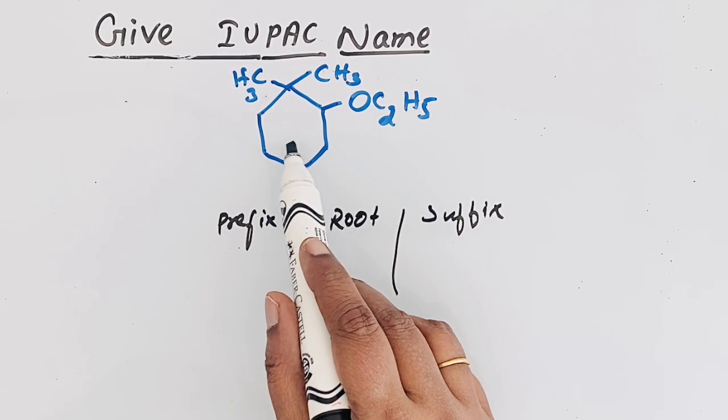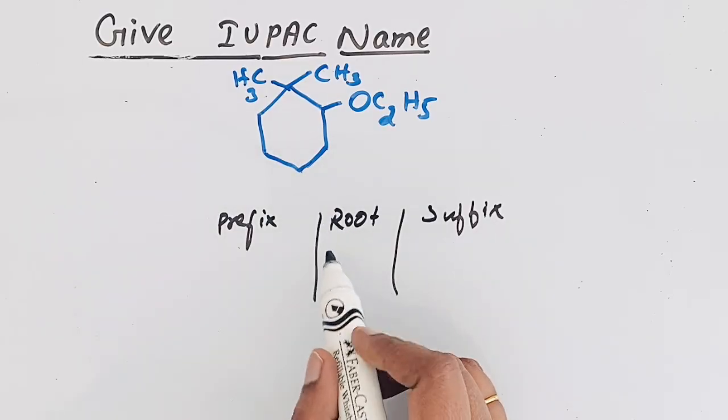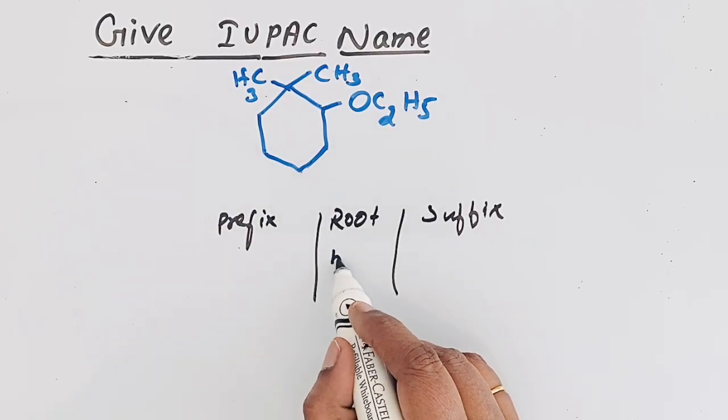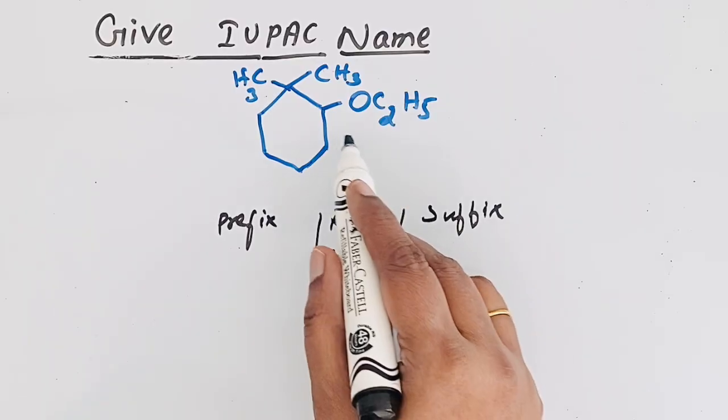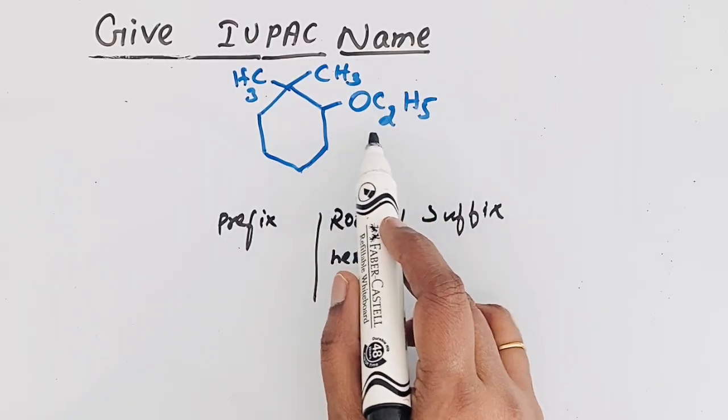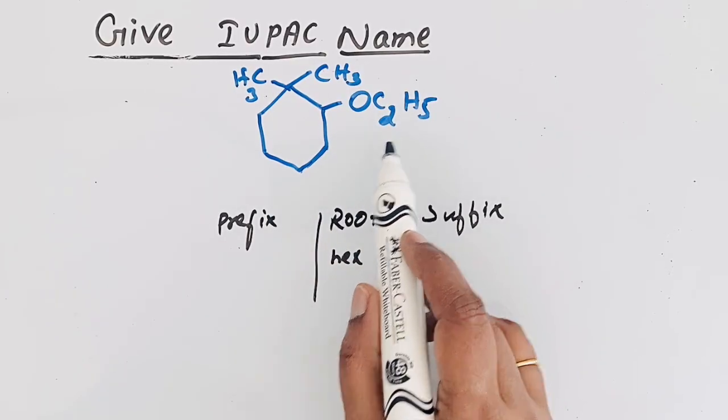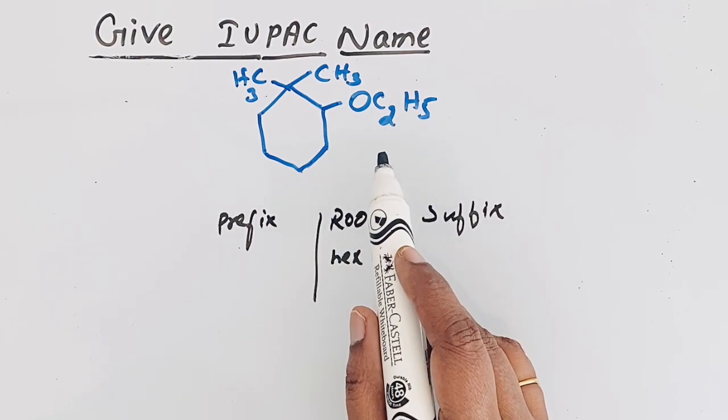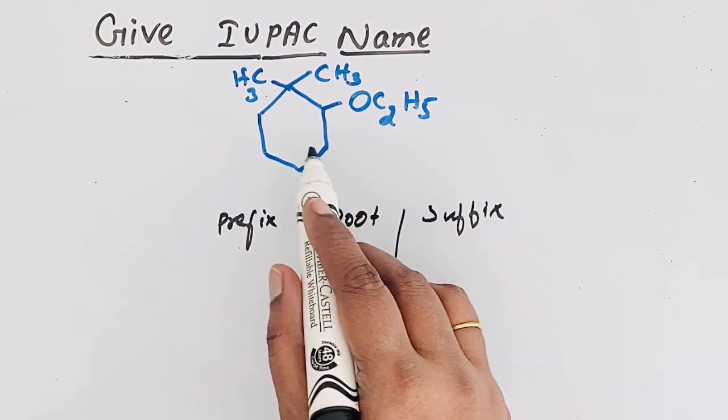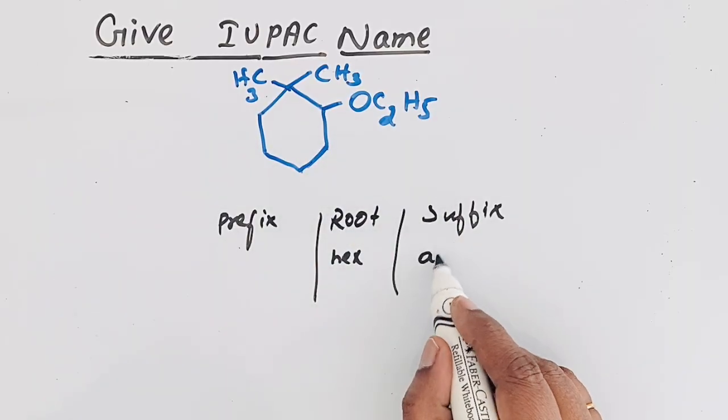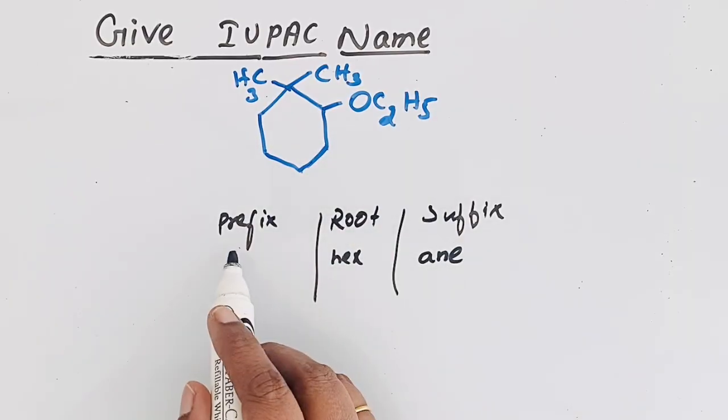So it is a parent chain, so the root word is hex. Then the suffix: this ether is not considered as the functional group, it is a prefix substituent. So the suffix - there is no double bond, so ane. Hexane is used.